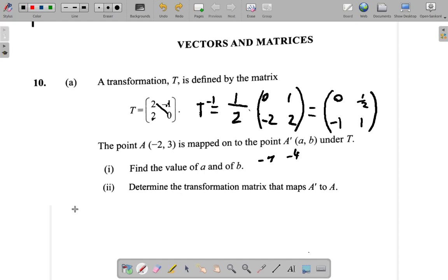Now the inverse of T, 0, half, negative 1, 1, let's multiply that by A prime, which is negative 7, negative 4, and see what we get. If we're going to get A, let me just erase some of the rough work that I did here. So let's go ahead now.